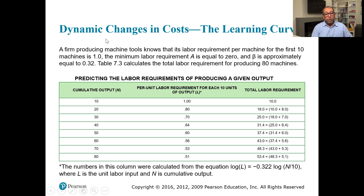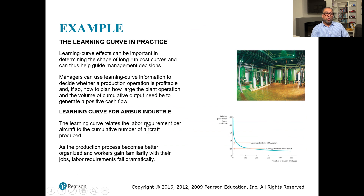Consider a firm producing machine tools where the labor requirement for the first machine is one unit, the minimum labor requirement a = 0, and β ≈ 0.32 (Table 7.3). As cumulative output increases, the per-unit labor requirement decreases: from 1 to 0.8, 0.7, 0.64, and so on. These values are calculated using the equation log L = −0.32 · log(N/10), where L is labor per unit and N is cumulative output.